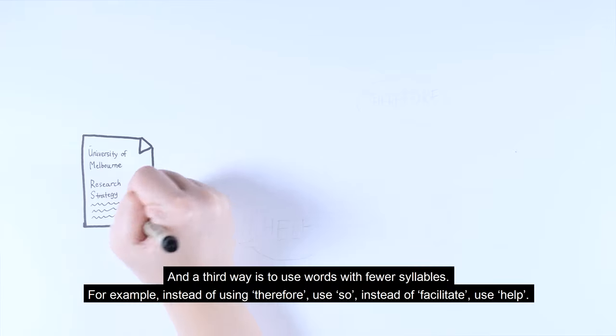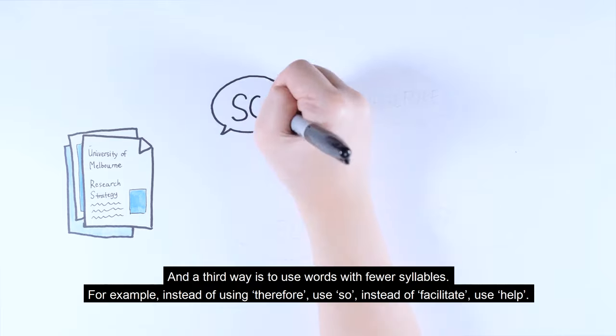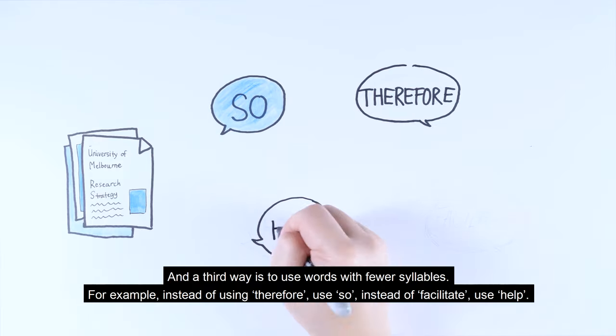And a third way is to use words with fewer syllables. For example, instead of using therefore, use so. Instead of facilitate, use help.